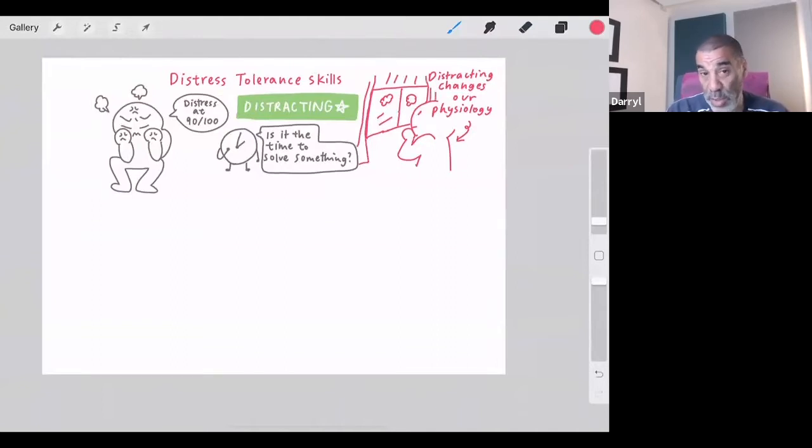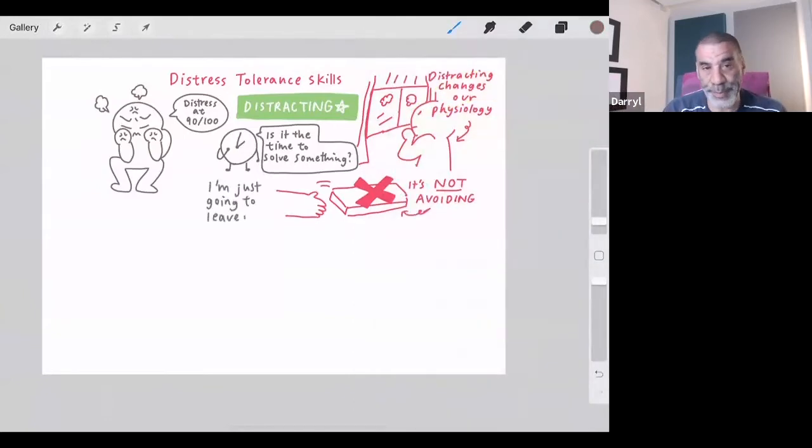Distracting is very different from avoiding something. When we avoid something and we're distressed, we often make it worse. When we're distracting, what we're doing is we're really saying to ourselves, I'm putting this aside for now. So you want to have a commitment to go back to solving the problem. Sometimes the problem will solve itself. Sometimes it won't be there. And sometimes there's a clear problem to solve.